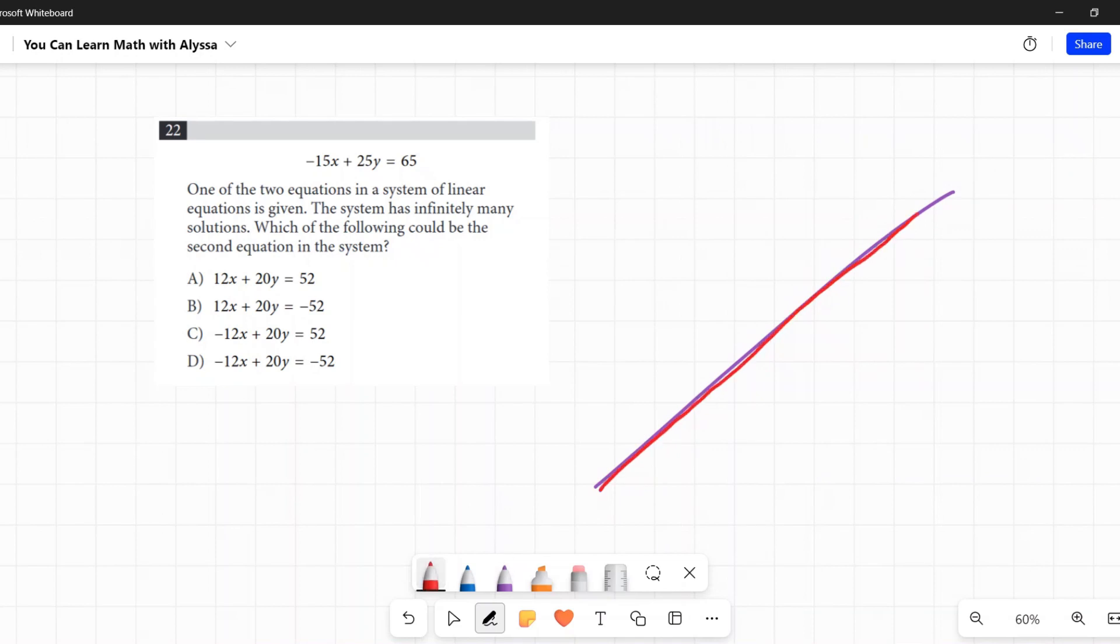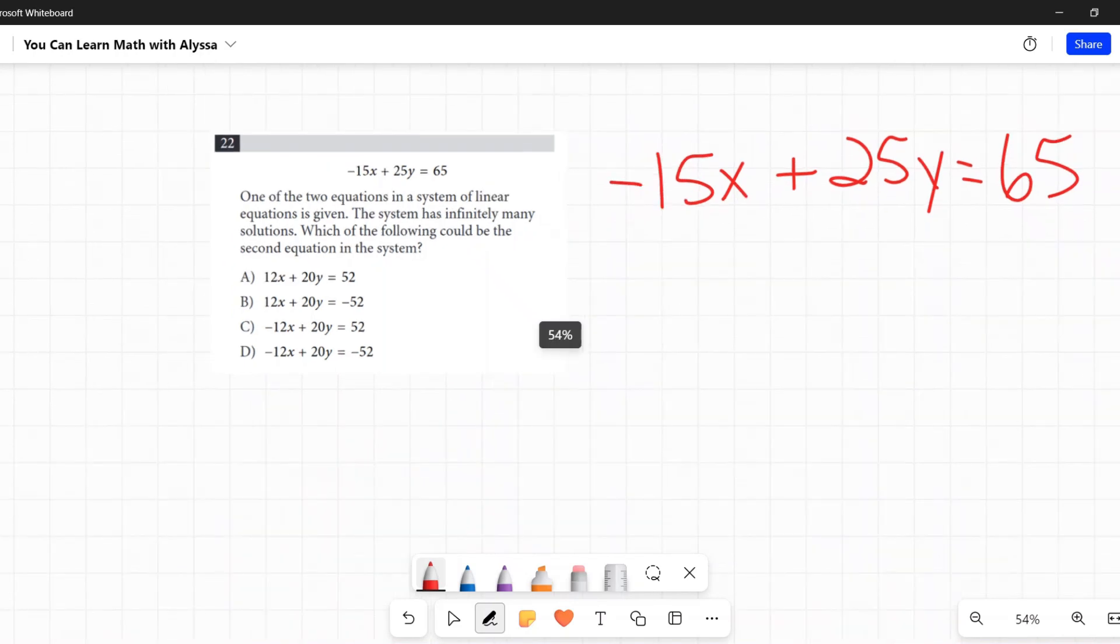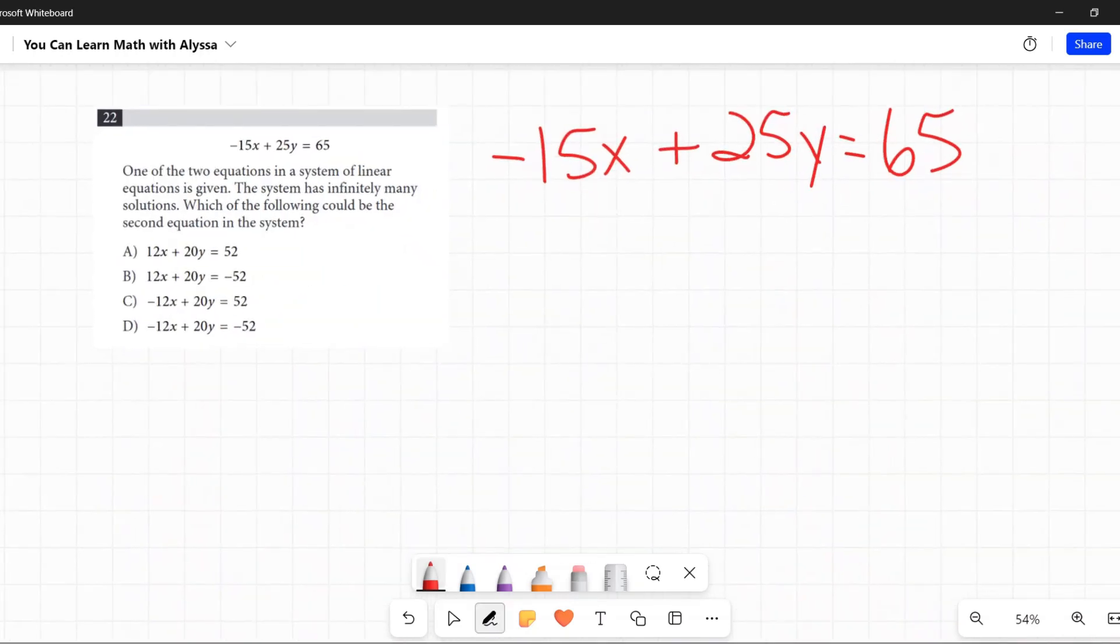So I have this line negative 15x plus 25y equals a positive 65. And yes, I'm emphasizing those signs because it's going to be important in a second. Now which of the following could be the second equation in this system? If you notice, because again they're asking us to look at these options and say which one is the best, which one could be the same line.